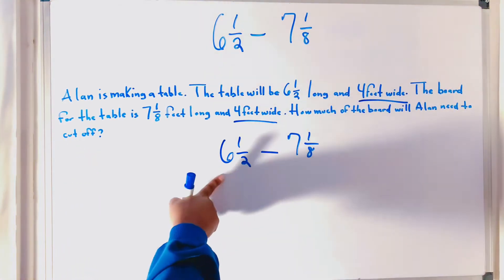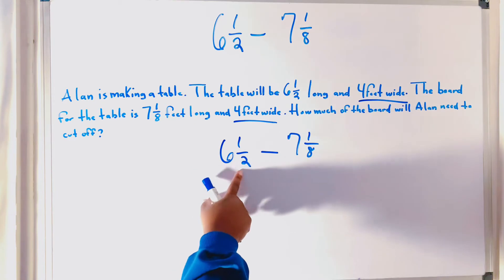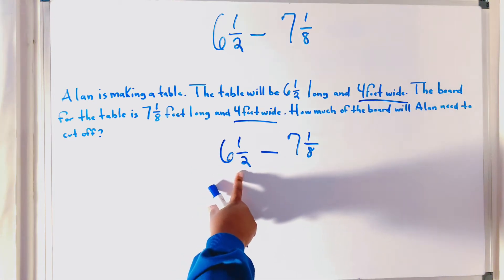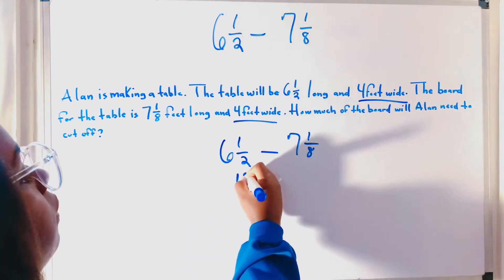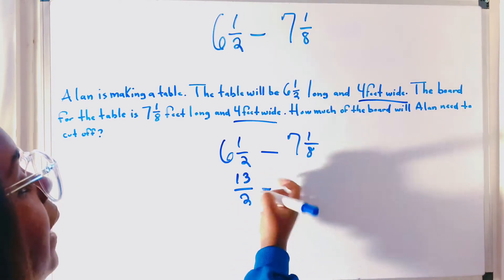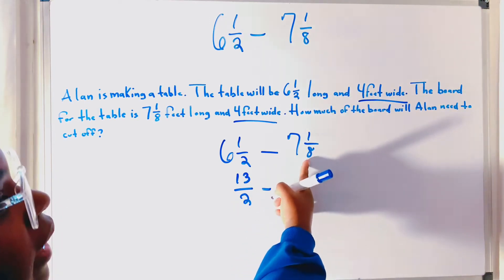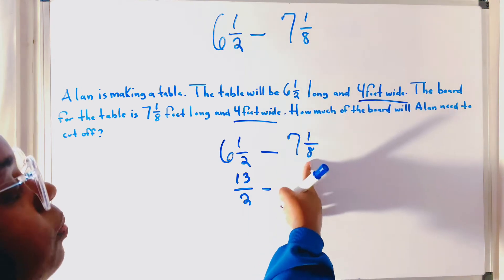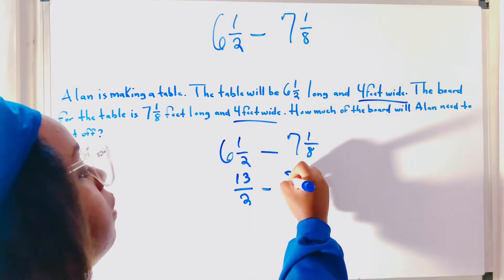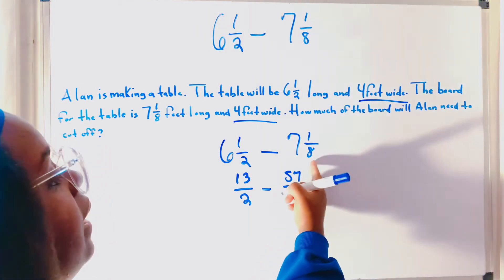And we're going to get rid of this mixed fraction. So, 6 times 2 is 12. 12 plus 1 is 13. That's going to give us 13 over 2. Minus 7 times 8 is 56. 56 plus 1 is 57 over 8.